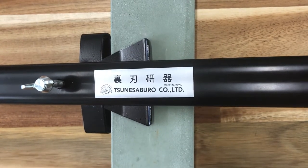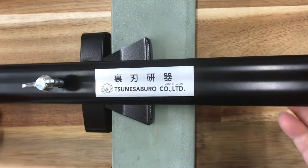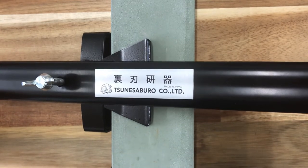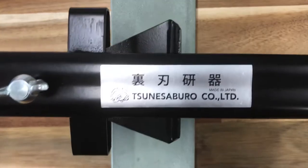Today we'd like to explain how to use Tsunesaburo's plane blade back edge sharpening gauge. This is the gauge.